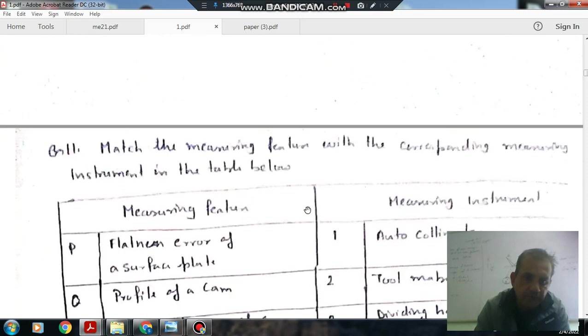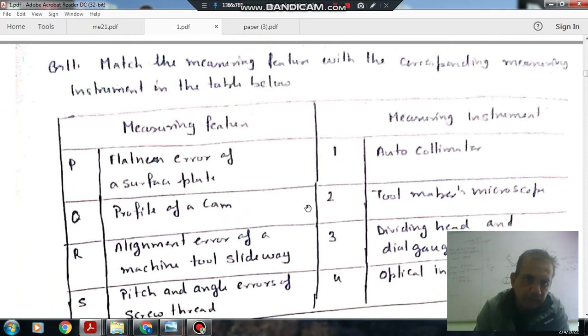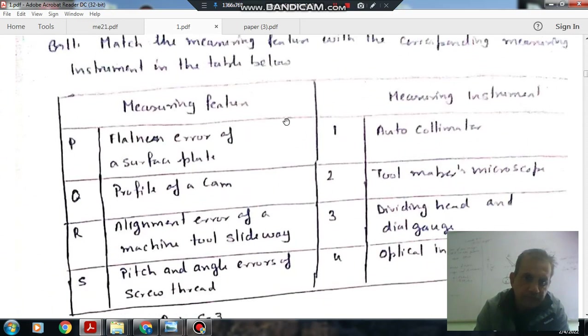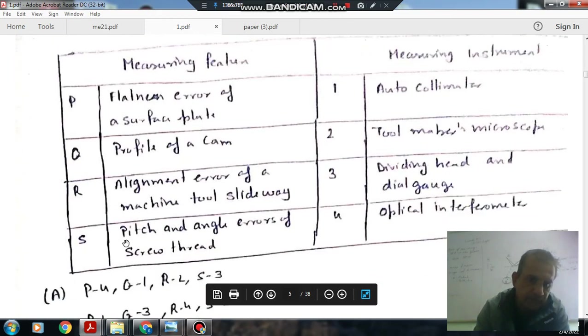Next, match the measuring feature with corresponding measuring instrument in the table below. P is flatness error of a surface plate, Q is profile of a cam, R is alignment error of a machine tool slide base, and S is pitch and angle error of screw thread.